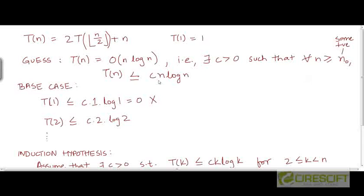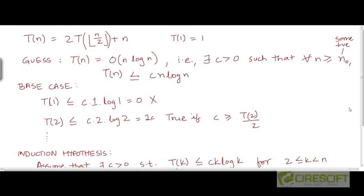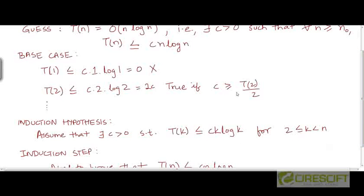So let's see whether the inequality applies at the next higher value of n. Is T(2) ≤ c·2·log 2? Well, T(2) = 2·T(1) + 2, so that will be some constant — it will be 4 or something. And c·2·log 2 is nothing but 2c. So this inequality will be valid if c is greater than or equal to T(2) divided by 2. If we choose a value of c larger than this constant, then this inequality will hold at n = 2.